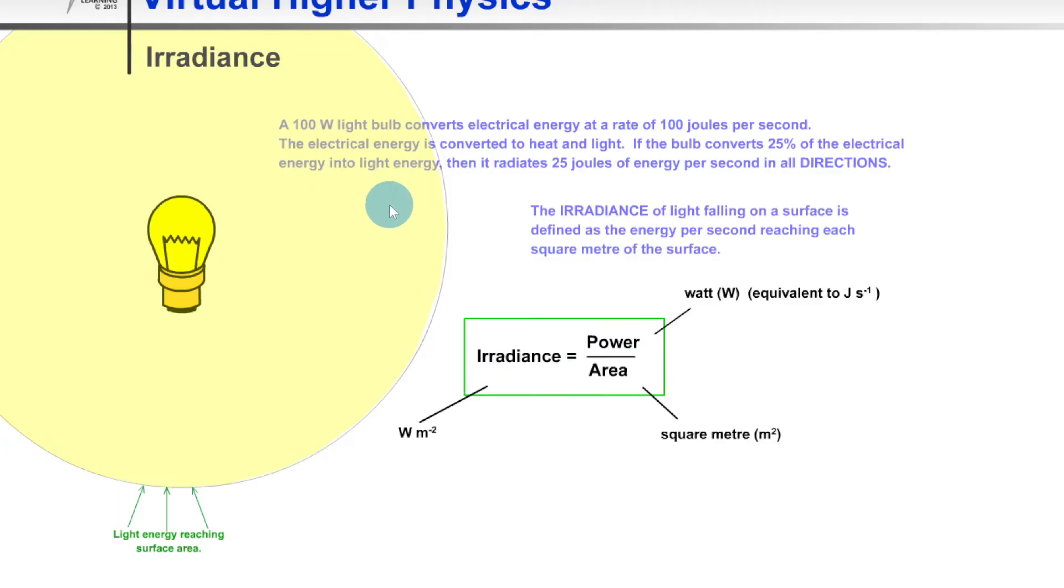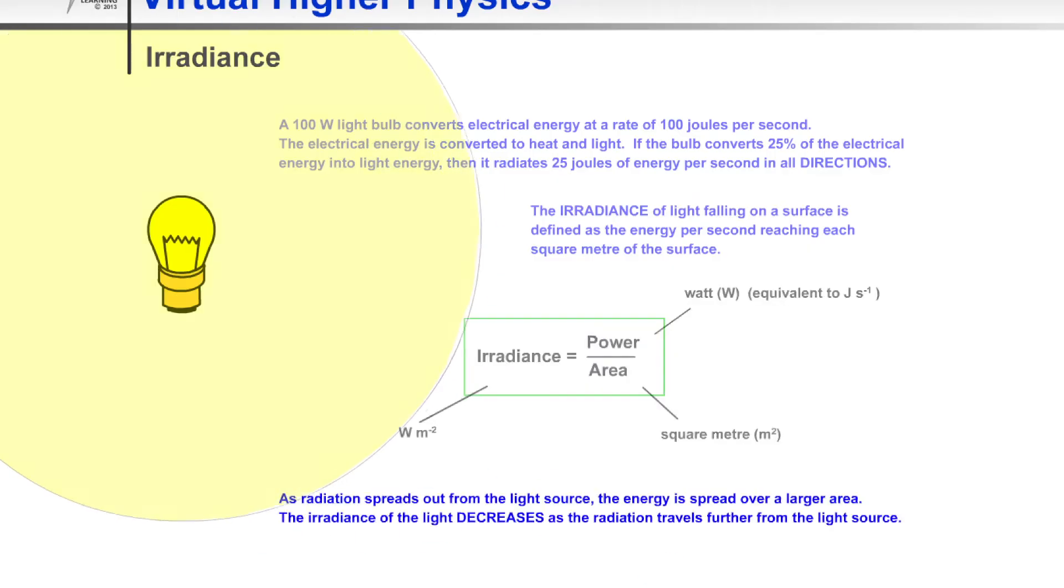If you look at what happens to the irradiance of the light from the bulb - the intensity - when I click next, you'll see that it gets fainter and fainter until it's really just a faint yellow color. This is why this happens: as radiation spreads out from the light source, the energy is spread over a larger area. The irradiance of the light decreases as the radiation travels further from the light source.